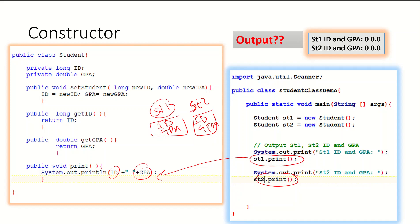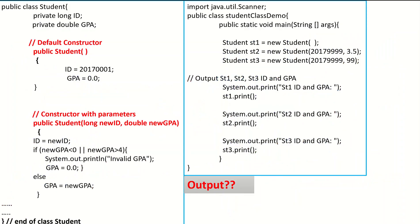That's why if you need your objects to have a default value — such that whenever you create an object you should have values in your object — then you have to add another method called a constructor. So we will do the same exercise. I will have ID and GPA, I will have the set method, the get method, the printing. But we will add one more method, which is the constructor. And this will be the new class we will have — the same class Student — I will add a method: constructor.